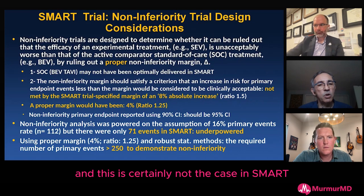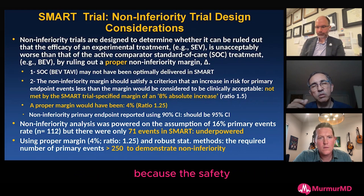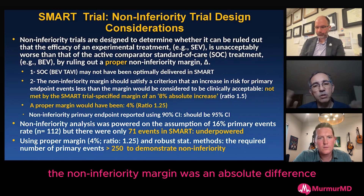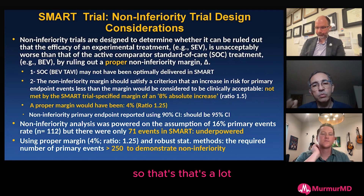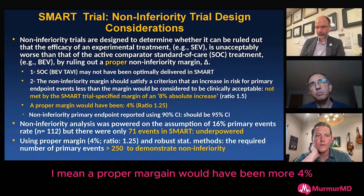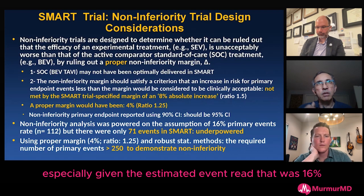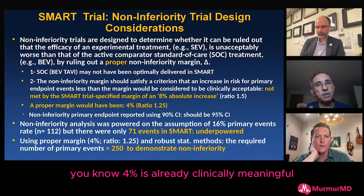It is very critical to use a non-inferiority margin that is clinically acceptable, and this is certainly not the case in SMART, because the non-inferiority margin was an absolute difference — an absolute increase of eight percent. That is a lot. A proper margin would have been around four percent, especially given the estimated average rate of 16%, where four percent is already clinically meaningful.